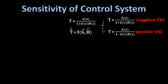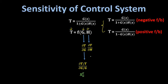If we want to find the sensitivity of the overall transfer function with respect to G, it equals (ΔT/T) divided by (ΔG/G), represented as S_TG. Similarly, the sensitivity of overall transfer function T with respect to feedback part transfer function H equals (ΔT/T) divided by (ΔH/H), represented as S_TH.